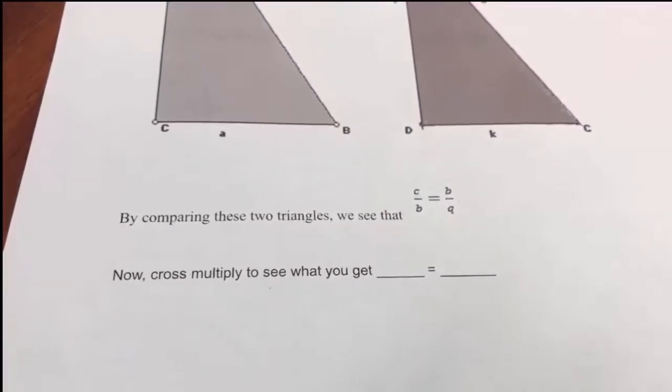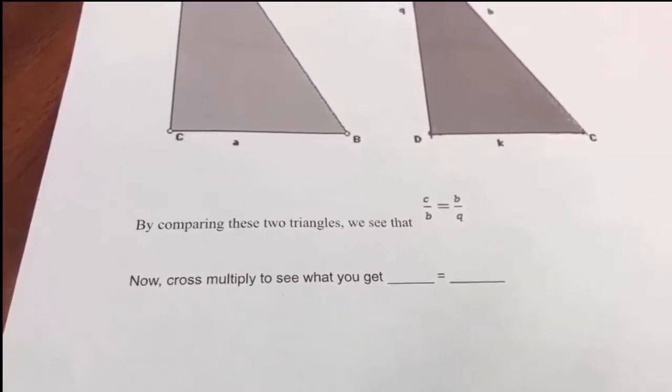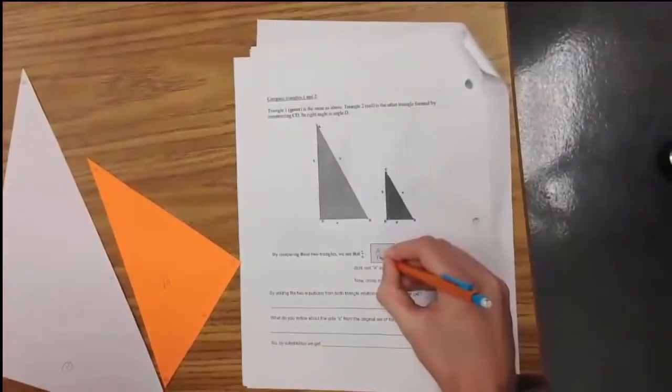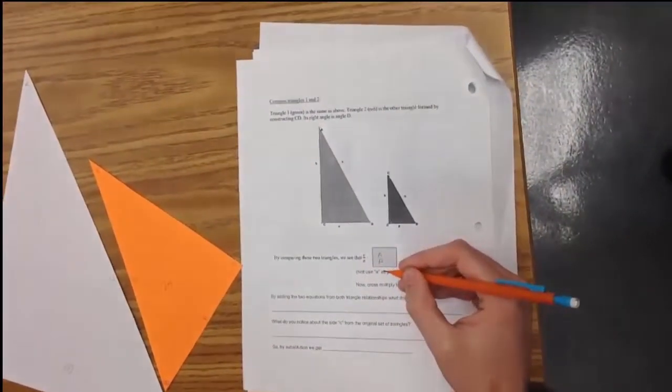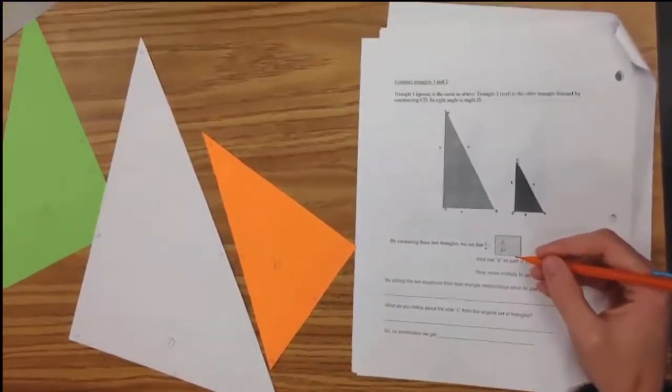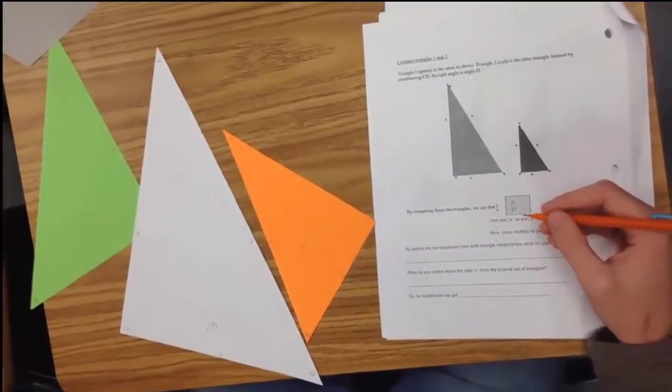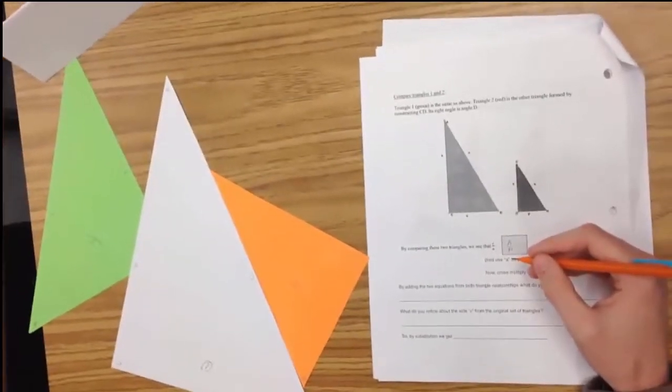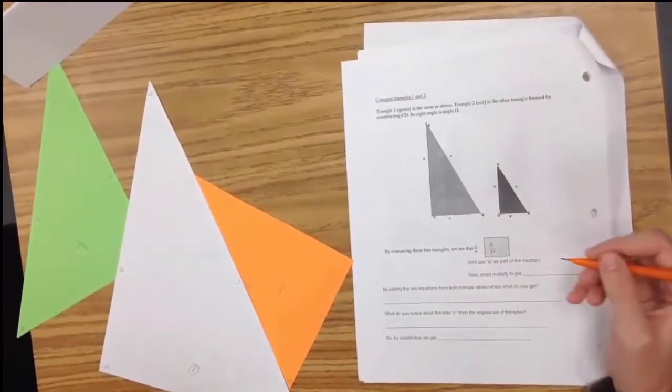You would get C times C equals B times B. B times B is B squared. Students will now apply the properties of similar triangles in the other two triangles in this proof and put these steps together to finish their proof of the Pythagorean Theorem using similar triangles.